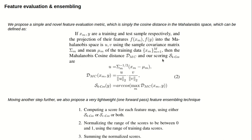We here propose using the cosine distance in the Mahalanobis space for feature evaluation. We also propose a very lightweight feature ensemble technique that uses only a single forward pass. And then our experimental results.